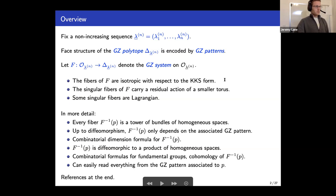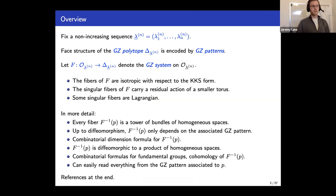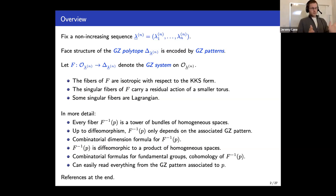In more detail: the fibers have a tower structure — a tower of certain bundles of homogeneous spaces. Up to diffeomorphism, the fiber only depends on the associated face of the Gelfand-Tsetlin polytope. So we encode faces as GZ patterns, giving a correspondence between fibers up to diffeomorphism and GZ patterns. From the GZ pattern you can give an explicit diffeomorphic description of the fiber and read off topological invariants — including a combinatorial formula for the dimension of the fibers.